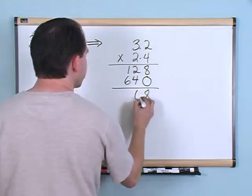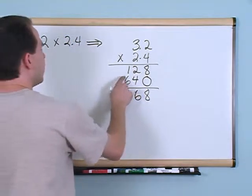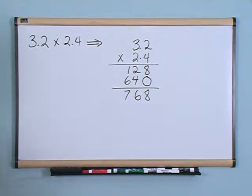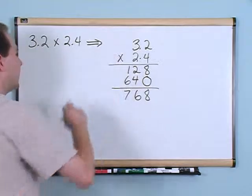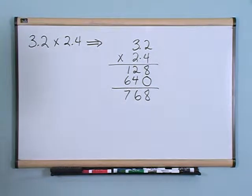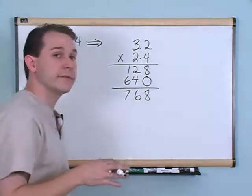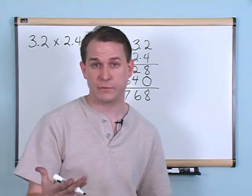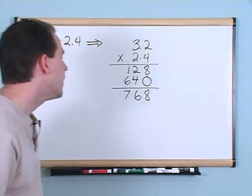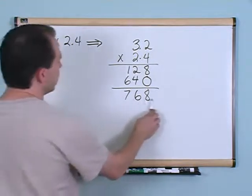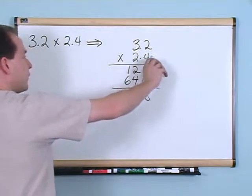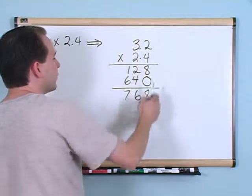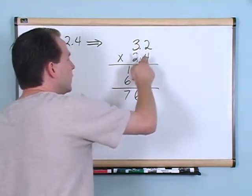We've done all the multiplication the same way as before. Now we add these up: 8 plus 0 gives us 8. 2 plus 4 gives us 6. And 1 plus 6 gives us 7. We've done the problem exactly as usual — we haven't even looked at the decimals. Now here is the only difference between what you know and what the decimals bring to the table.